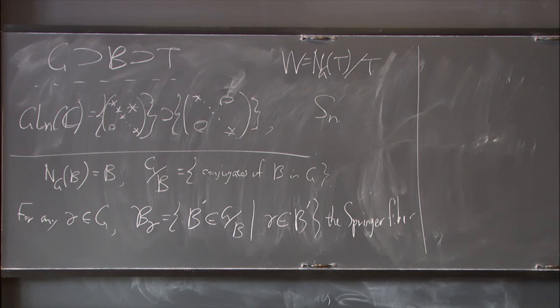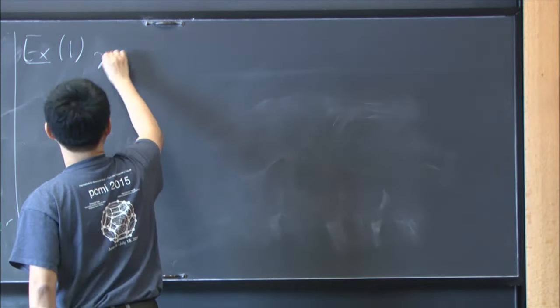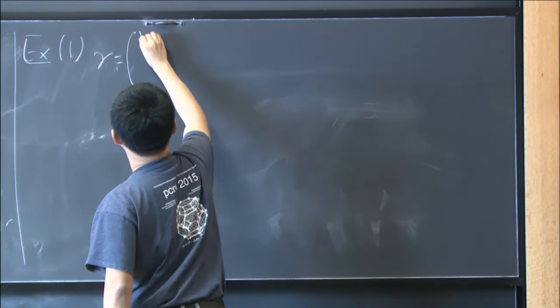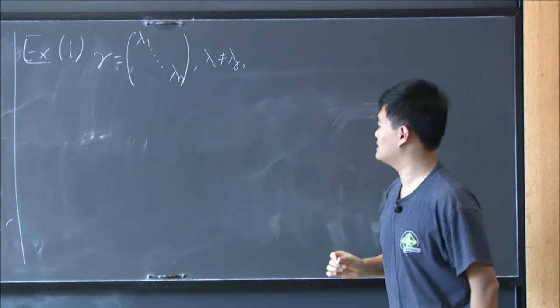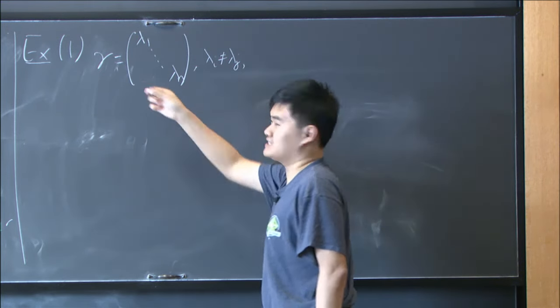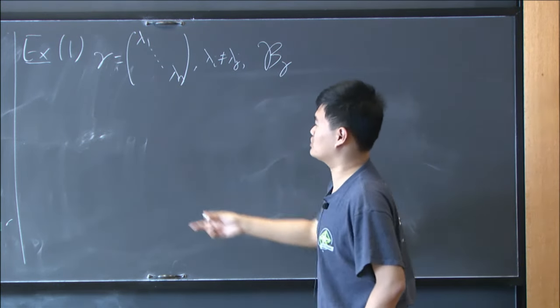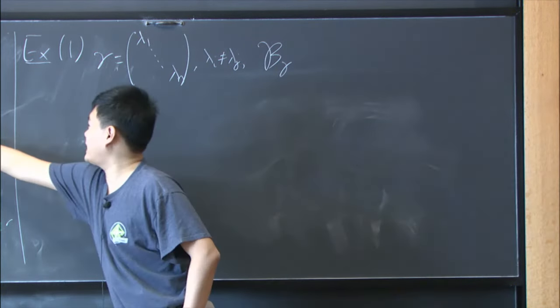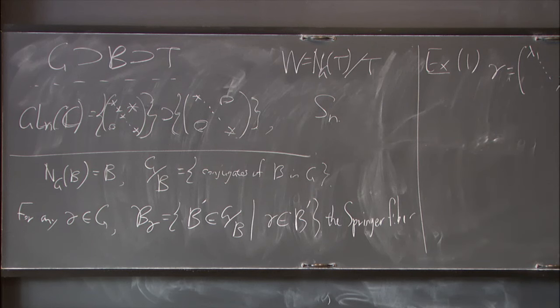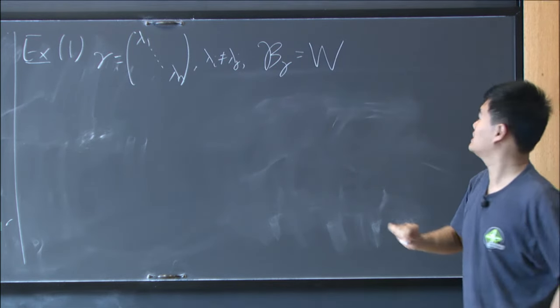So the cool story about this Springer fiber, maybe I will give some examples. So first, if gamma is regular semi-simple, so an example in GL_N is this gamma with distinct eigenvalues, then those Borels that contain this gamma is the same as those conjugates of upper triangular matrices that contain a diagonal. So they are exactly those conjugates given by permutations of N entries. So this will be S_N in that case, or the Weyl group, non-canonically.